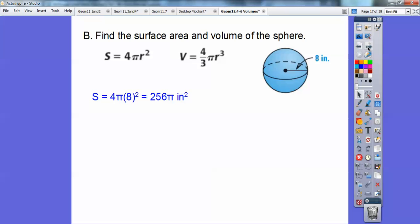Surface area is 4 times π times 8 squared. You've got to square the eight first, and you get 64. 64 times 4 is 256π, and it's in inches squared. So surface area, anything areas, square units.